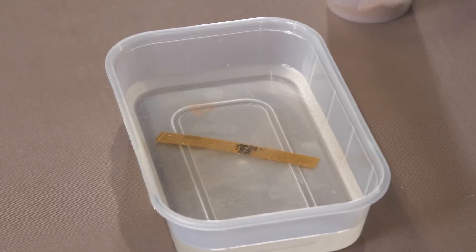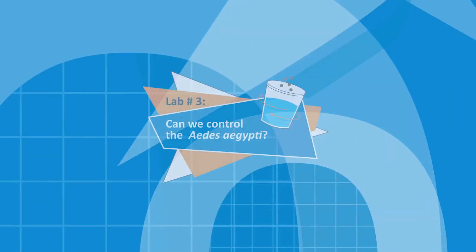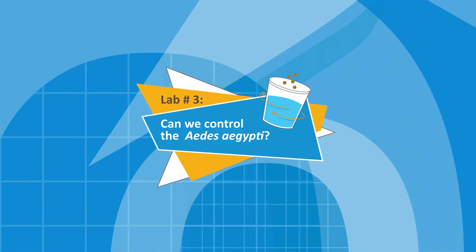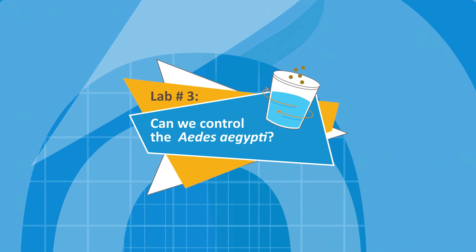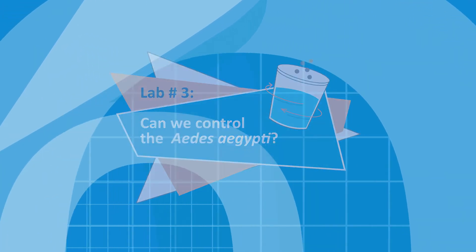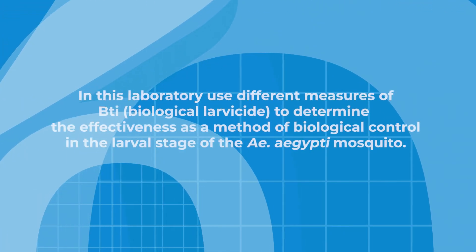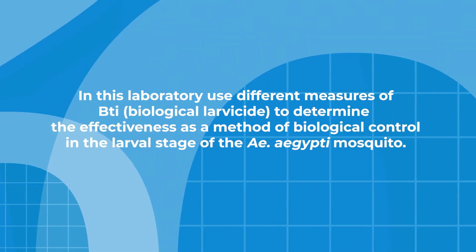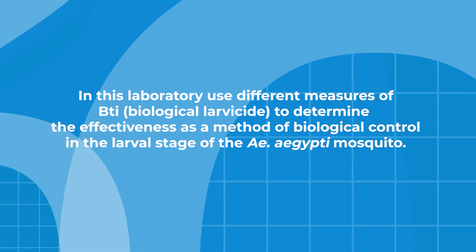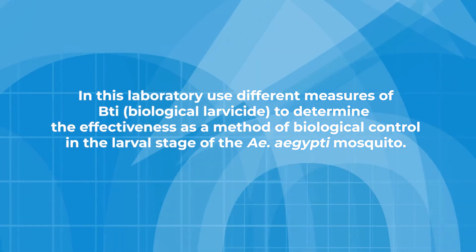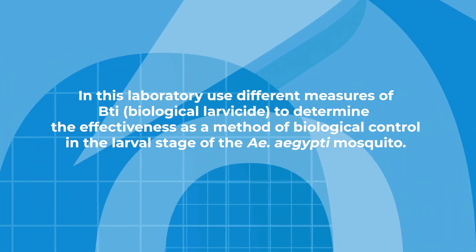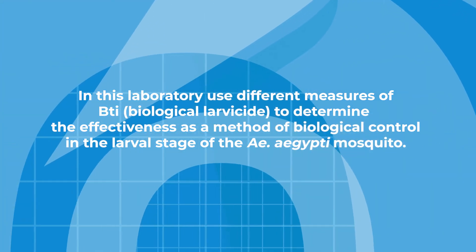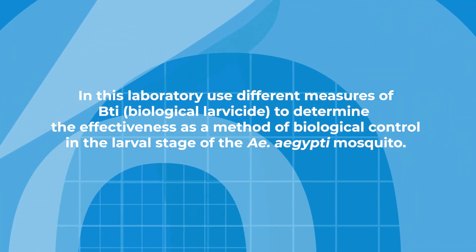You are going to use the larvae for laboratories number three and four. Lab number three: Can we control the Aedes aegypti? In this lab, use different measures of BTI, or biological larvicide, to determine the effectiveness as a method of biological control in the larval stage of the Aedes aegypti mosquito.